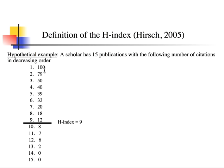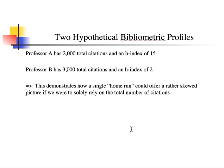The H-index is found by rank-ordering all publications and finding the point while the number of citations is still greater than the corresponding ordinal ranking. This gives a very good snapshot of a scholar's influence to ensure the metric is not skewed. For example, Professor A has 2,000 total citations and an H-index of 15, meaning she has 15 publications with 15 or more citations, and her 16th most cited publication has fewer than 16 citations.